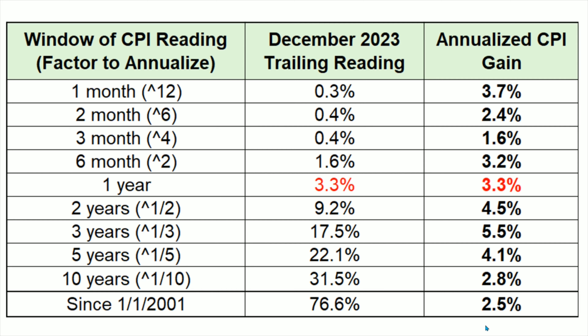They also added a row of CPI measured over the entirety of the 21st century from January 1st, 2001. This takes a lot to move in either direction, but it's trending at 2.5%, and the last 10 years is trending at 2.8%. So no, inflation is not high as measured by the CPI, and the CPI is not rigged either, as we saw from the Goldman Sachs Commodity Index.